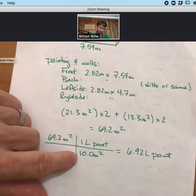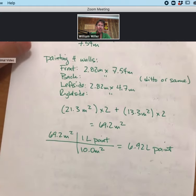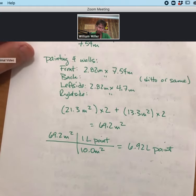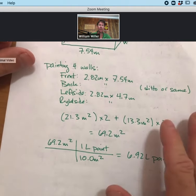We use our unit conversion factor: 10.0 meters squared is covered by one liter of paint. And we get 6.92 liters of paint necessary.